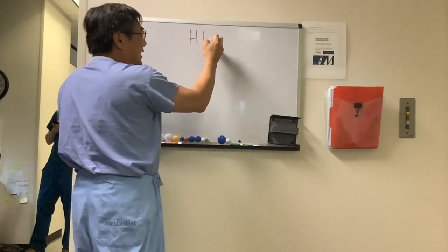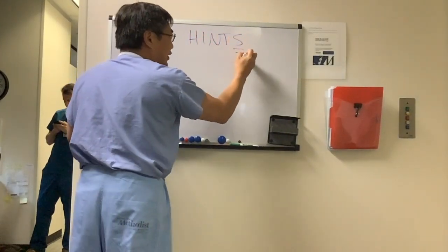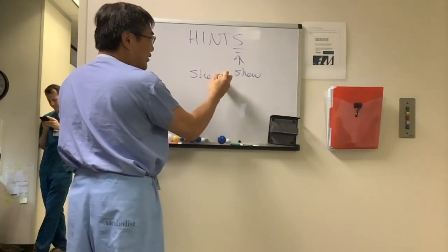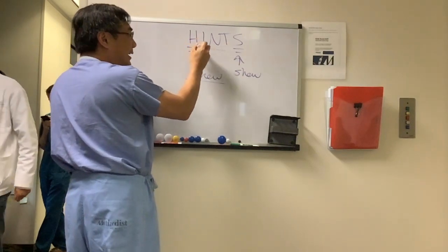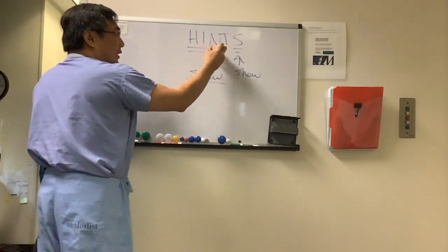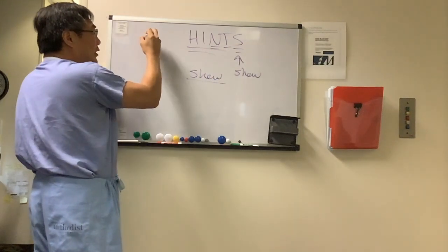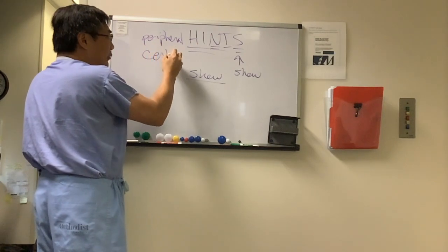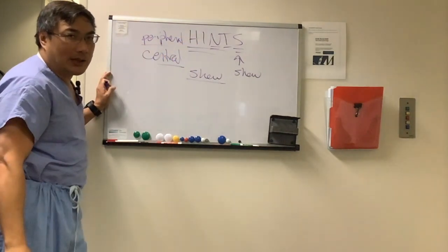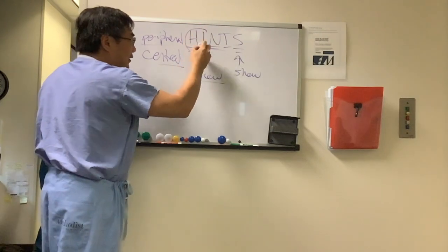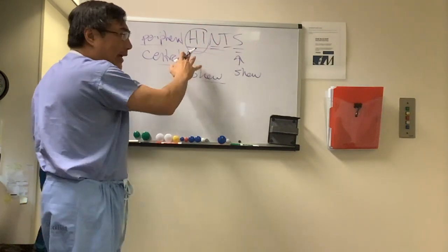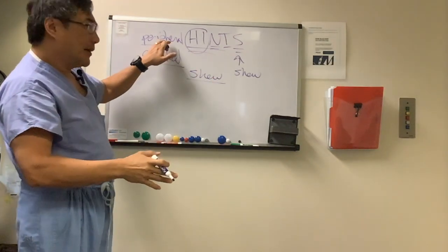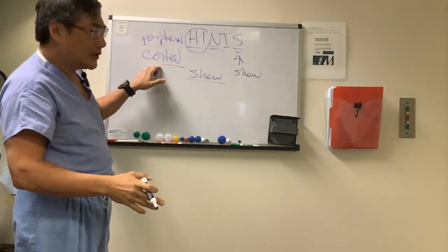Someone was asking about HINTS with skew. The S is for skew deviation. The head impulse test, the nystagmus, and the test of skew are what we use in the emergency room or in the acute setting for deciding whether we have a peripheral or a central cause of vestibulopathy. You should look at the video on HINTS for more information. In the head impulse test, you're rapidly moving the head to see if there's a corrective saccade to implicate the peripheral system — it would be normal in a central vestibulopathy.